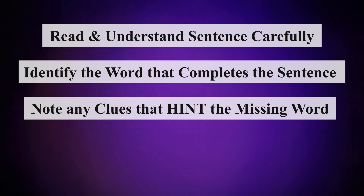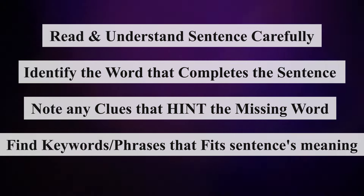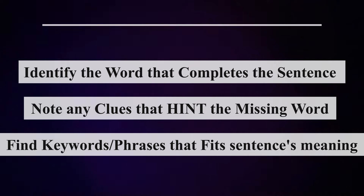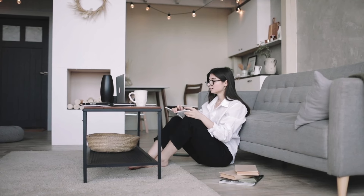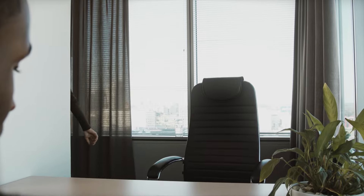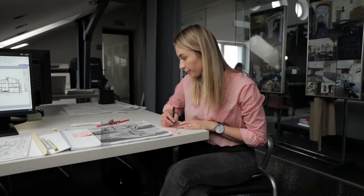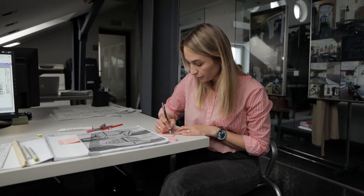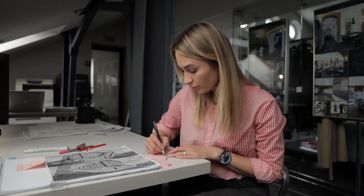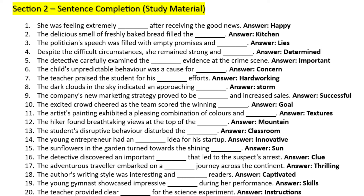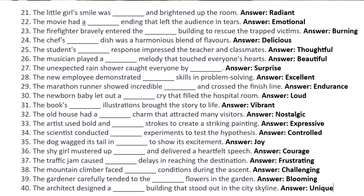Pay attention to any clues within the sentence that may hint at the missing word. Look at the keywords or phrases and think about what could fit. The good thing about this section is there could be multiple answers for a single fill-in-the-blank. For example, instead of 'beautiful,' you can also write 'divine,' 'delightful,' 'marvelous,' or 'wonderful.' Point to be noted: do not leave the fill-in-the-blank section blank. If you're not able to find the answer, still write something, as leaving it blank will result in negative marking. Try to be realistic and do this only if you get stuck. To help you practice, I'll share 40 examples of sentence completion — take a screenshot or pause the video to read them.